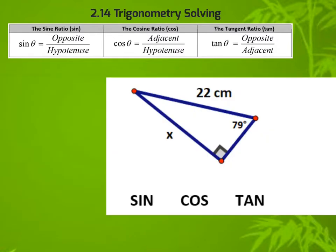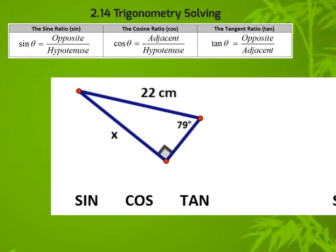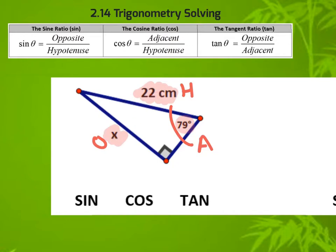Let's continue with a little more practice. In this case, this is my reference angle, that makes this h and this a, and this is my opposite. I want to solve for x, so I include the opposite side. I have the hypotenuse, and I have the angle. So we need opposite and we're involving hypotenuse — by now you know that is the sine ratio.